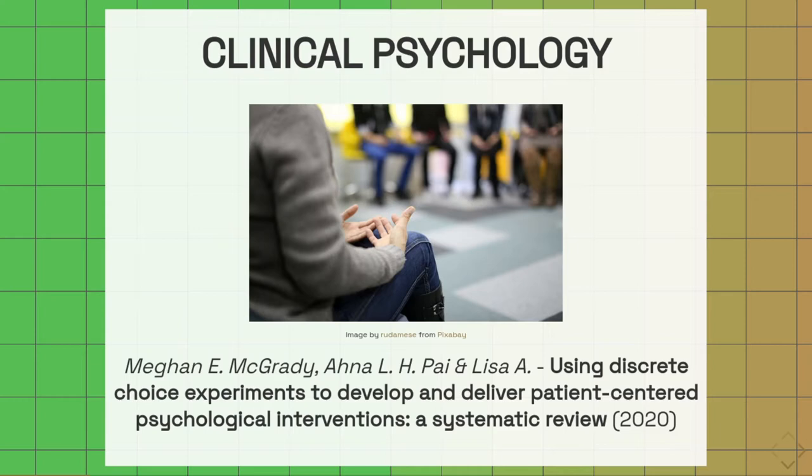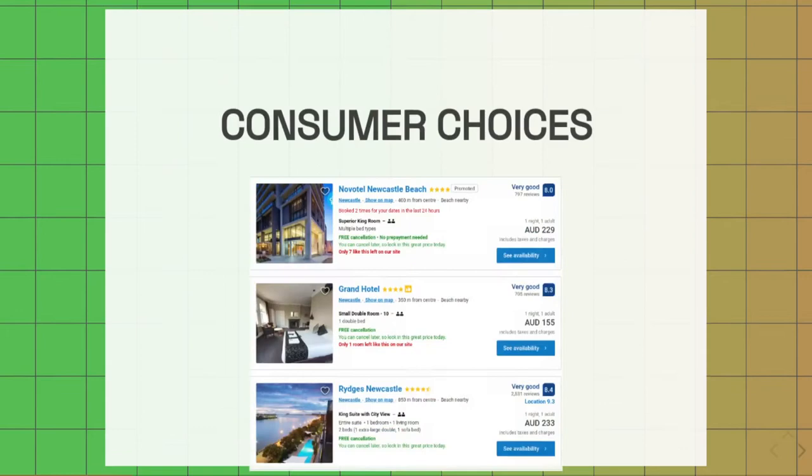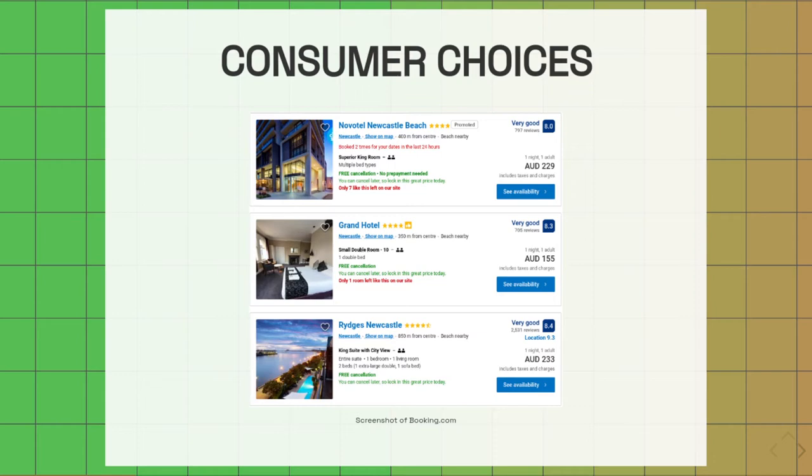But they're also used in things like transport economics, climate change economics, a whole range of different scenarios. If you think about their format, we also see them quite regularly as consumers when we're looking at comparing different products via a number of different services, in this case Booking.com, where we're comparing these hotels based on the price, the rating, and other attributes of the hotel rooms.